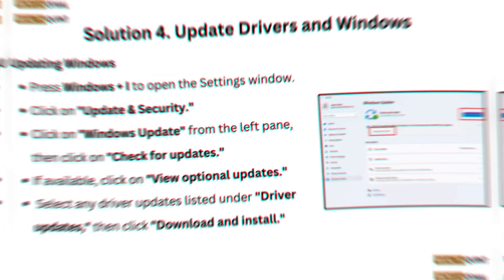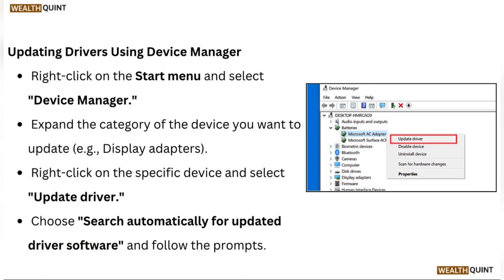To update drivers using Device Manager, right-click on the Start menu and select Device Manager. Expand the category of the device you want to update, right-click on the specific device, and select Update Driver. Choose Search Automatically for updated driver software and follow the prompts.